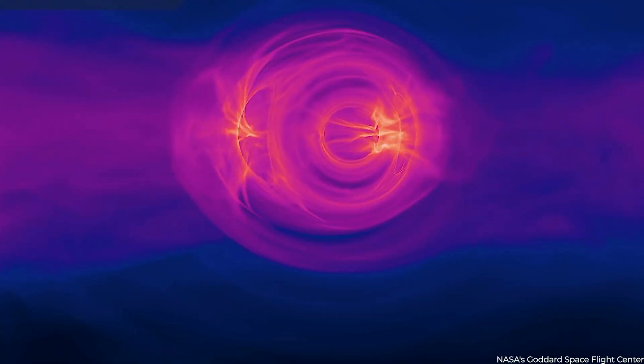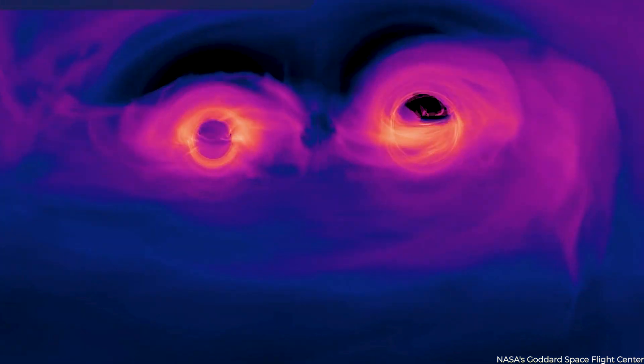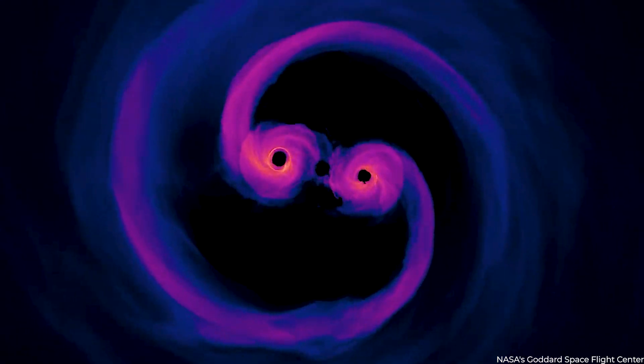This suggests that the black hole was previously part of a supermassive black hole duo and that during a galaxy merger, a third supermassive black hole was added to this partnership, tossing out one of its members.